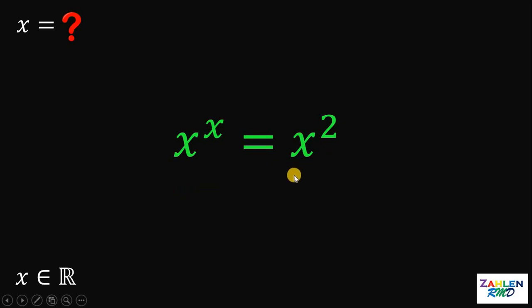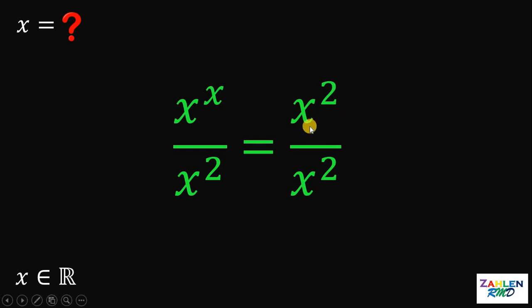First thing to do is to divide both sides by x squared. The right hand side is just 1 because x squared over x squared is just 1.